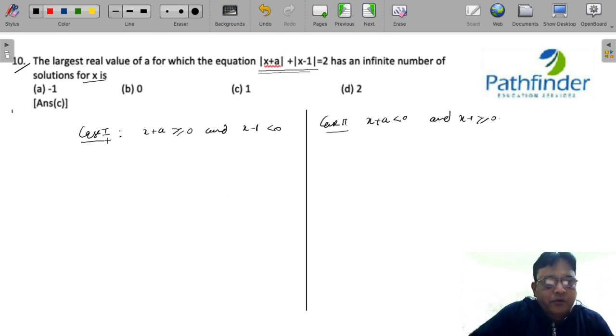So what happens when x+a is greater than 0? |x+a| I can write it as x+a, and |x-1| can be written as -(x-1), and this is equal to 2.